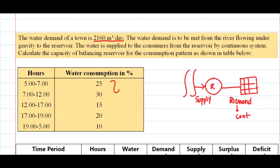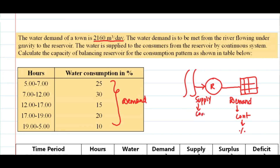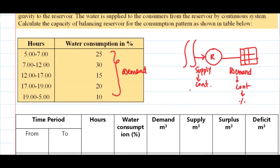The consumption pattern is given for the demand part, expressed as consumption percentage. For the supply part, since nothing else is given, we assume a continuous system. The demand is to be made from the river, so we need to uniformly distribute 2160 meter cube per day — that means calculating per hour.